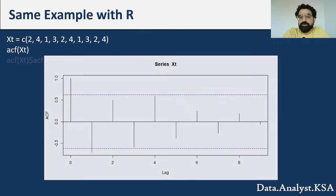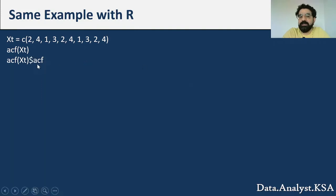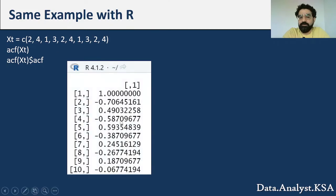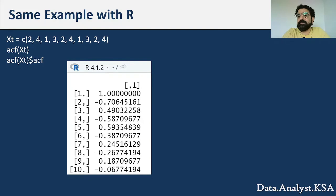In R, define your time series as a vector xt = c(2,4,1,3,2,4,1,3,2,4) and run ACF(xt). This gives the correlogram showing lag 0 as 1 and lag 1 beyond the 95% confidence interval, while all other values fall within it. Calling the ACF object directly confirms the values: lag 0 = 1, lag 1 = -0.7, lag 2 = 0.49, lag 3 = -0.587. Only lag 1 is statistically significant, indicating short-term correlation.